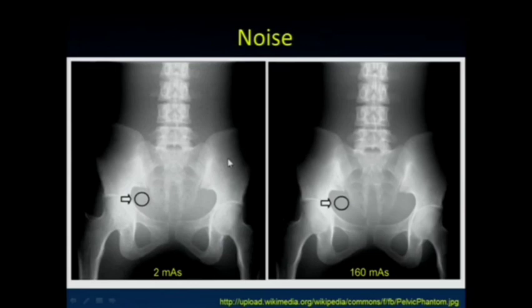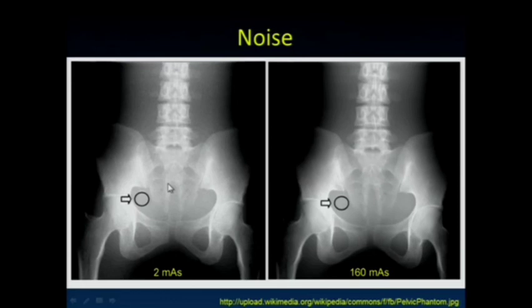Just as an example, here's a phantom of a pelvis radiograph obtained with 2 milliamp seconds, so current times time, and here at 160, 80 times more mAs. You can see the speckling here compared to here. Here's a contrast versus resolution versus noise. We've got some different size disks, and they're in a background setting of some noise, and there's a column of them which are higher contrast than the next column and the next column. You can really get a feeling for how both contrast and spatial resolution, in conjunction with noise, play a role in how conspicuous a lesion is to us. There's an interplay between all of those quantities.